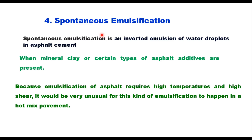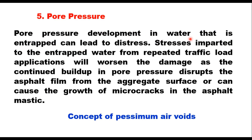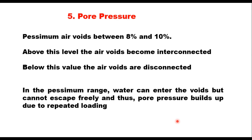Then comes pore pressure. Pore pressure development in entrapped water can lead to distress. Stress imparted to the entrapped water from repeated traffic load applications will worsen the damage, as continued build-up in pore pressure disrupts the asphalt film from the aggregate surface or can cause the growth of micro-cracks in the asphalt mastic. Here, understand the concept of pessimum air voids — the range within which most asphalt mixes are typically compacted, generally 8 to 10 percent. Above this level, air voids become interconnected and moisture can flow out under traffic load. Below this level, the air voids are disconnected, relatively impermeable, and do not become saturated with water. In the pessimum range, water can enter the voids but cannot escape freely, and pore pressure develops due to repeated loading, which may ultimately lead to stripping.